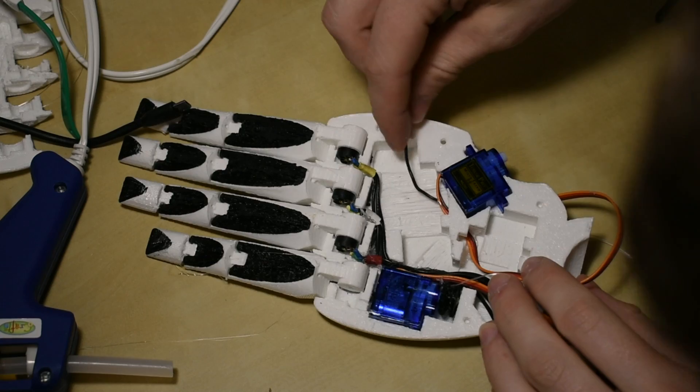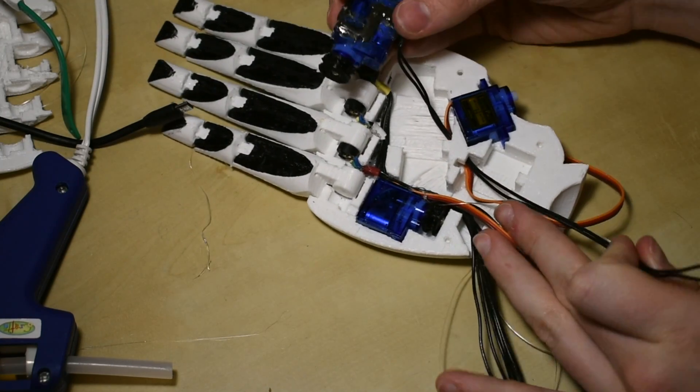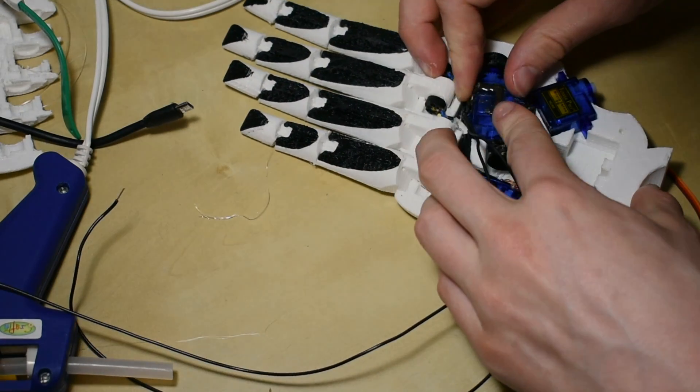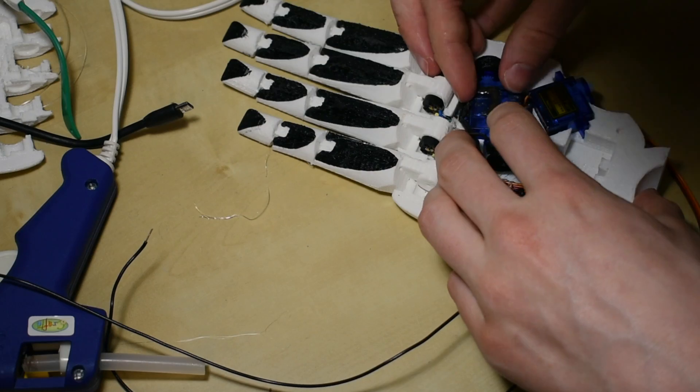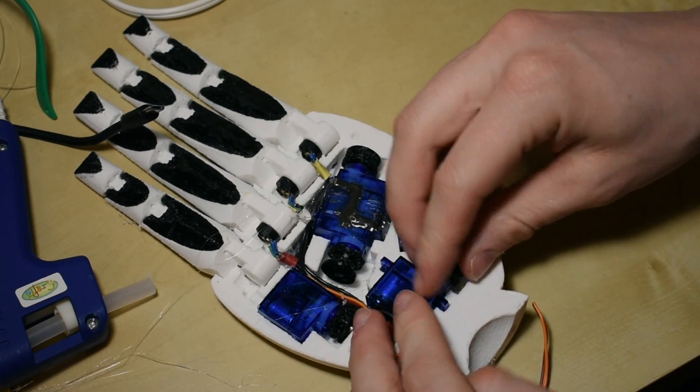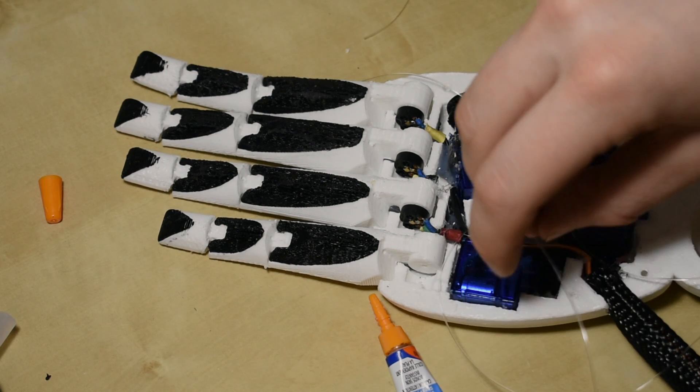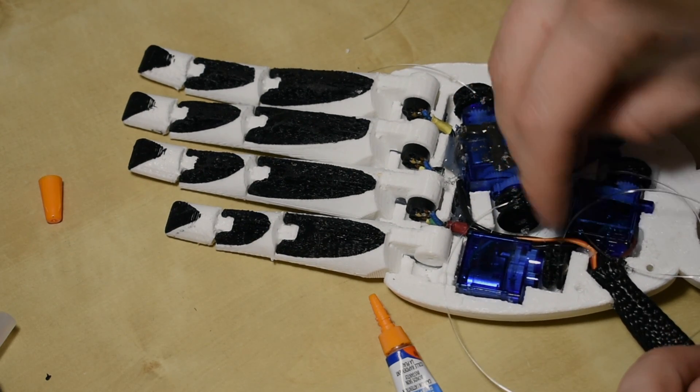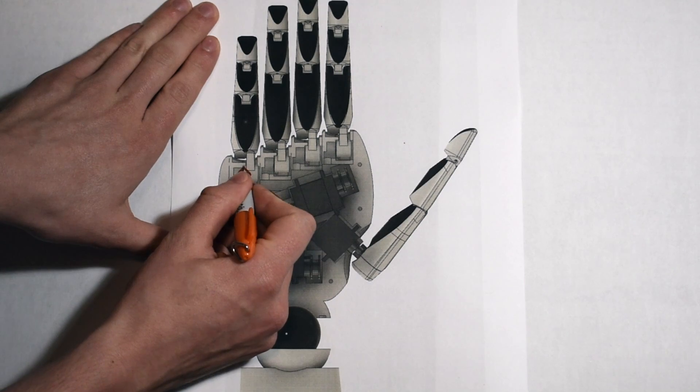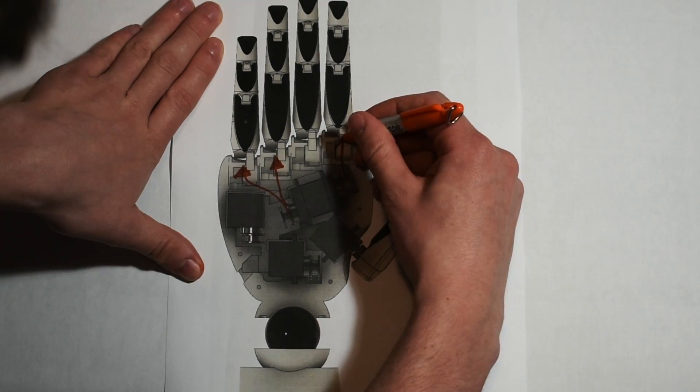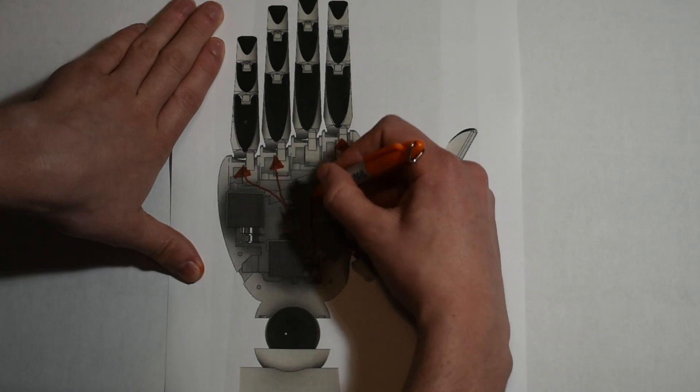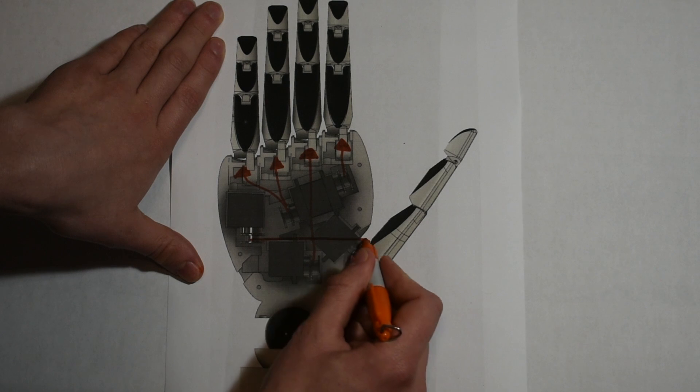The pinky doesn't get its own potentiometer because both it and the ring finger are pulled by strings attached to the same servo. Each of the servos has a black pulley that pulls a string attached to its respective finger. The pinky and ring fingers share the same pulley while the index and middle fingers have their own.